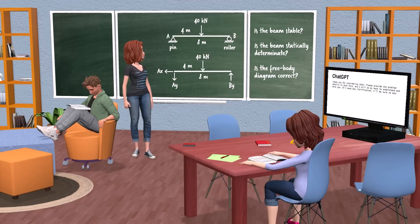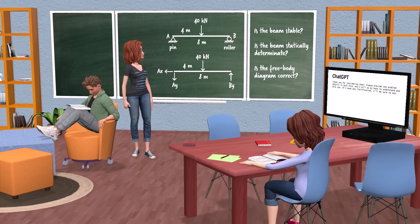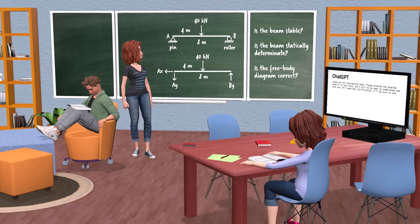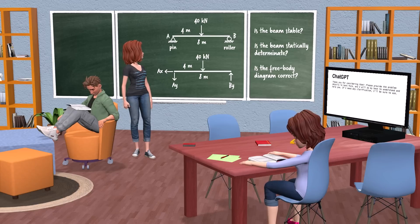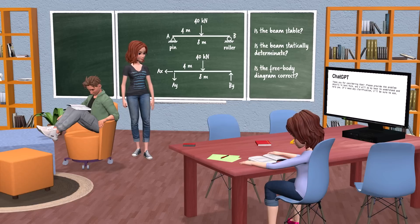Consider a beam subjected to a concentrated gravity load. The load is located at the midpoint of the beam. The load magnitude is 40 kN. The length of the beam is 8 meters. Let's label the left end of the beam A and the right end of the beam B. There is a pin support at A and a roller support at B. That is all I have for the problem definition. If you are ready, I would like to ask you a few engineering mechanics questions about the beam I just described.